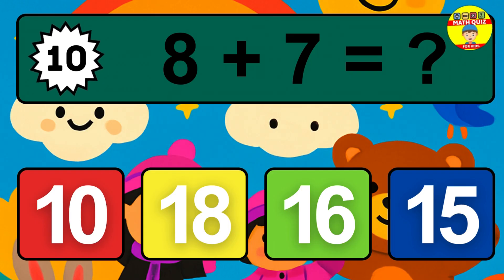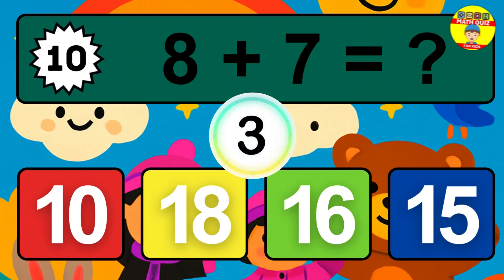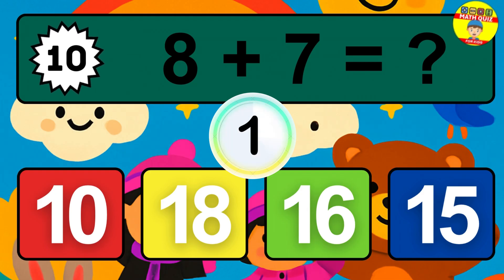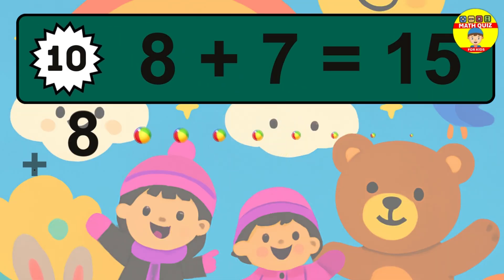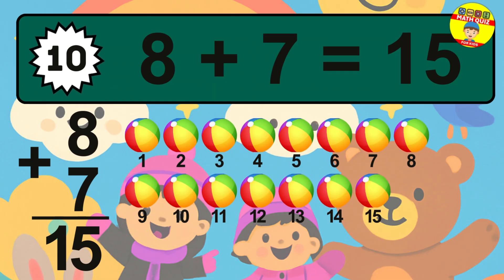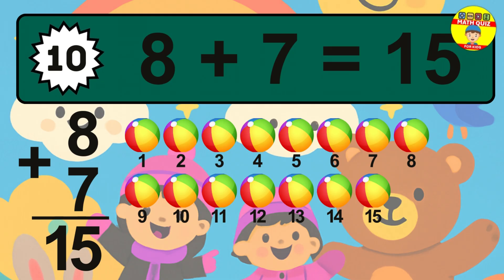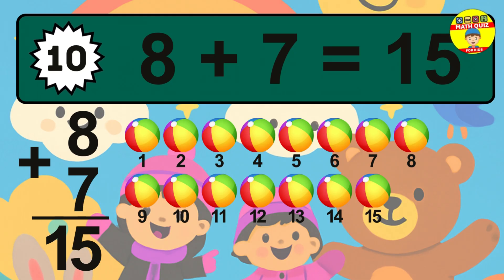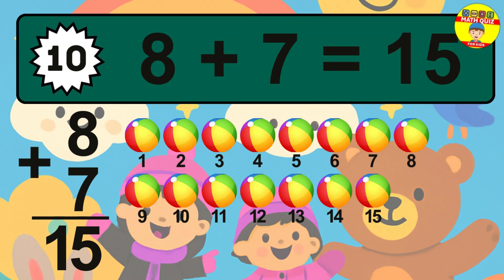Question 10. 8 plus 7 equals what? The answer is 8 plus 7 is 15. Let's count it: 1, 2, 3, 4, 5, 6, 7, 8, 9, 10, 11, 12, 13, 14, 15.